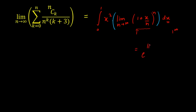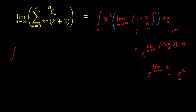For a 1^∞ form, the limit equals e raised to the power of limit n→∞ of (1 + x/n - 1) times n, which simplifies to e raised to the power of limit n→∞ of (x/n) times n. The n's cancel, giving e^x. So the limit as n→∞ of (1 + x/n)^n equals e^x.